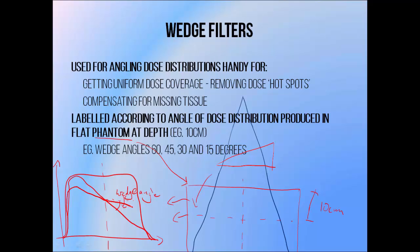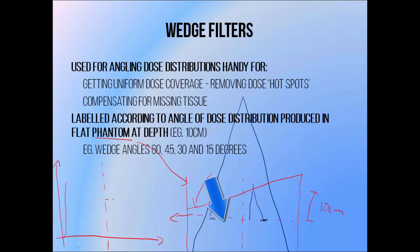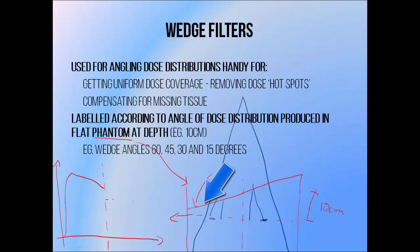This is useful because if we irradiate a part of a patient that isn't flat, our dose distribution is not going to be flat either. Photons that reach a given depth on one side of the patient are going to travel through less tissue than ones that reach the same depth on the other side, so they'll be attenuated less and the dose on that side will be higher.